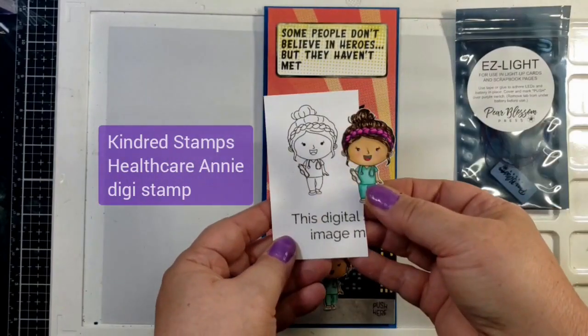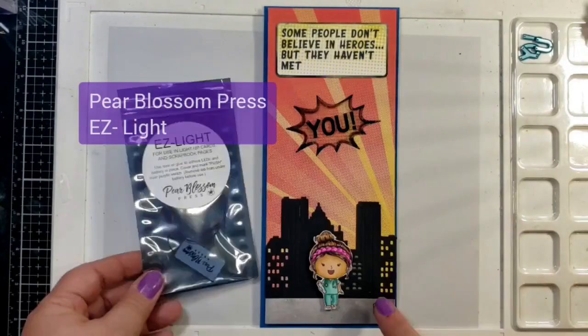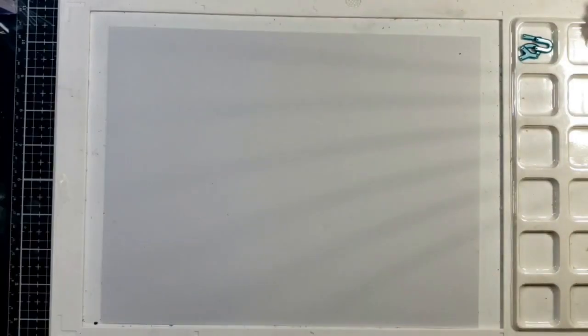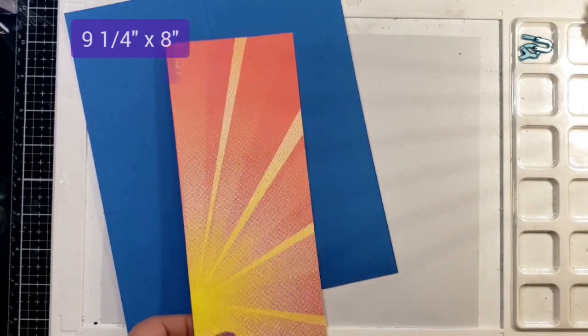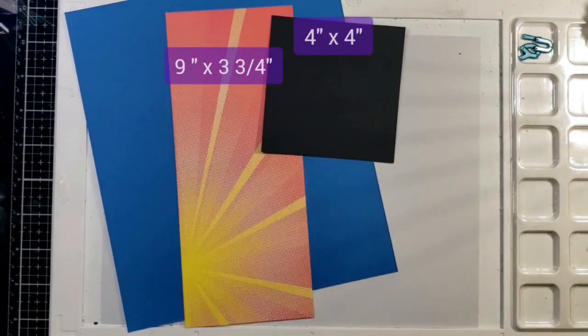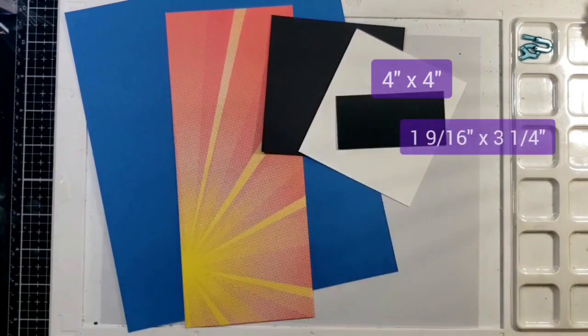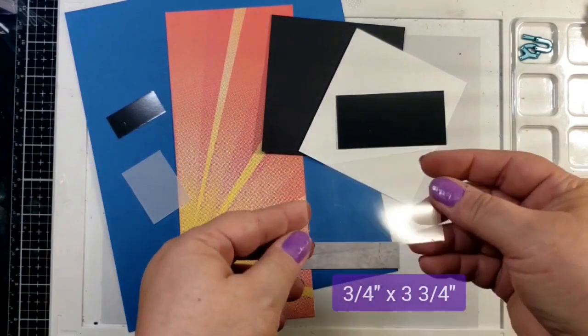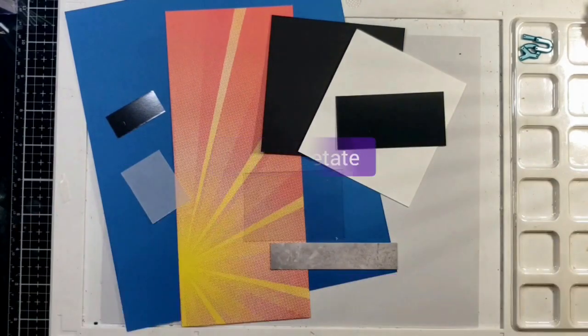This is Healthcare Annie. I've already colored her with an alcohol marker and these are the easy lights by Pear Blossom Press that are going to light up our cityscape and our little explosion area. The printed paper and the papers and cardstocks I'm using include also acetate and some vellum. So this is everything that we will be using to create the card today.